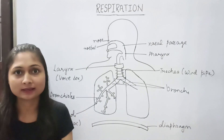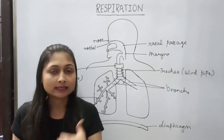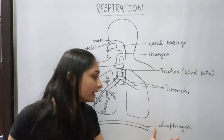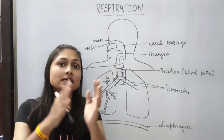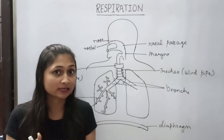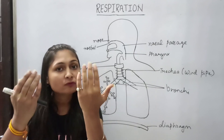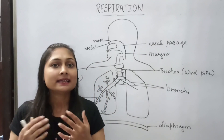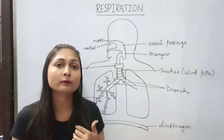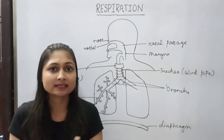Now let's see the mechanism of breathing. There are two things: breathing in and breathing out. When we breathe in, the rib cage muscles move outward and upward, and the diaphragm moves downward. When we breathe out, the rib cage moves inward and downward, and the diaphragm moves upward, and the gas — which is carbon dioxide — goes out through the body.